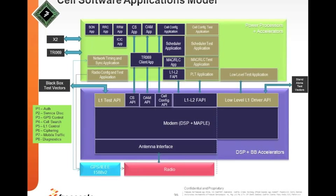The power processor and accelerator contains: a SON application, radio resource control for bringing users into the network, the RRM application managing radio resource requirements, ICIC for interference management and inter-cell coordination, and cell search which helps the small cell discover itself when freshly brought into the network.